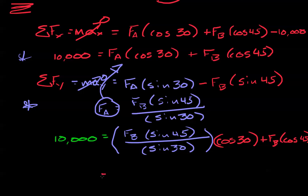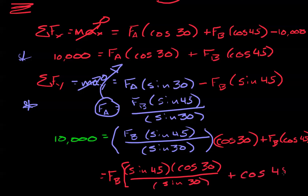Let's take this force A and substitute it in there. Now that said, we're going to have a new equation, 10,000 equals, and now where I would put force A instead, I'm going to do force B sine of 45 over sine of 30. And now I'll go back to multiplying that by cosine of 30 plus force B cosine of 45.